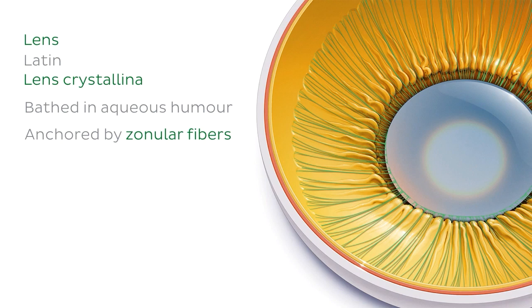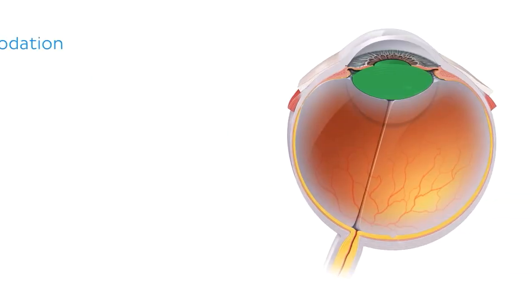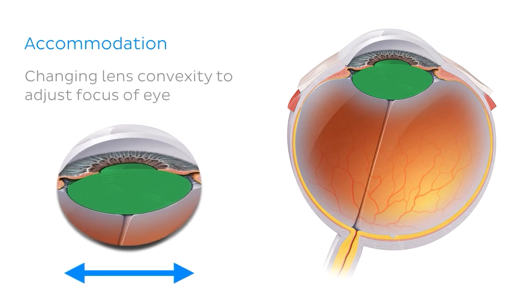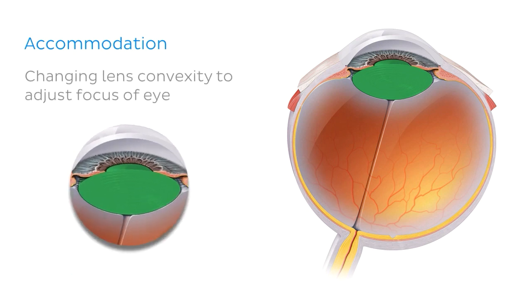Collectively, these zonular fibres — seen here highlighted in green — transmit the forces needed to stretch the lens. This brings us to the lens's main function, which is accommodation. Accommodation is the active process of changing the lens's convexity to adjust the focus of the eye, and this is done by the contraction of the ciliary muscles.